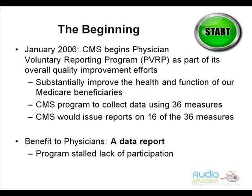So let's move on to slide six and get a little bit of history here. I'm a history person — it's always interesting to me where these things get started. Do you remember the old PVRP, the Physician Voluntary Reporting Program that they talked and touted so much in 2006? CMS was going to start that with 16 measures, and that was going to be their quality health reporting mechanism. The PVRP actually had the same goals as the PQRI. January 2006 was the PVRP.